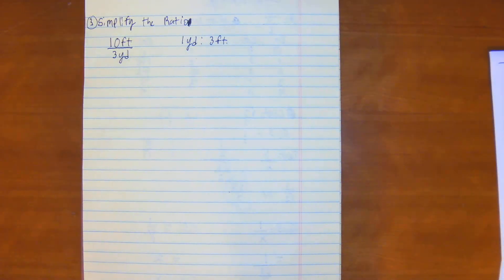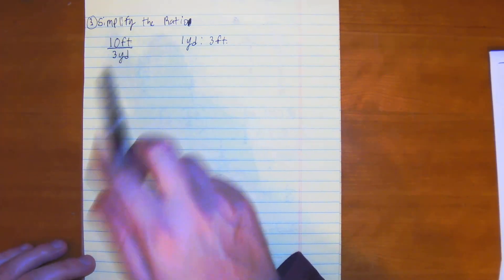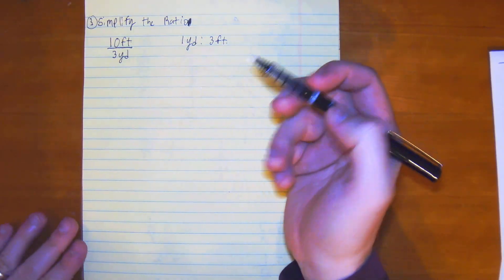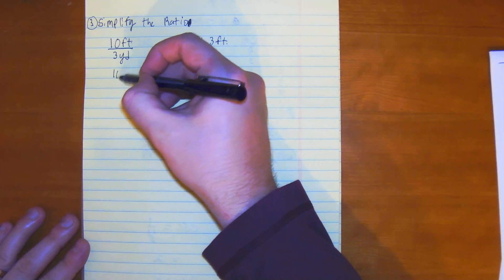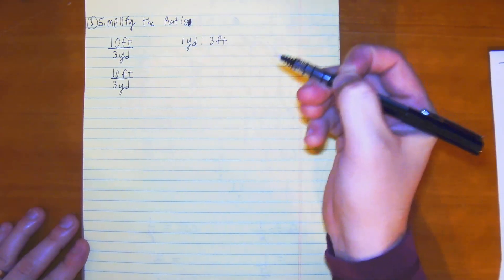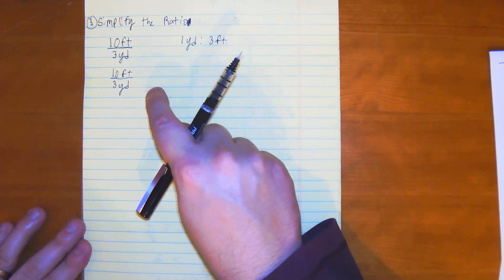So, to solve this one, what you would do is you would figure out how to get rid of feet and yards. Last time it was feet divided by feet would get rid of feet. So, let's rewrite it. So, 10 feet over 3 yards. We need feet on the bottom.